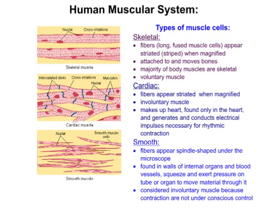The last system in this section is the human muscular system. There are three main types of muscle cells. Skeletal muscle cells have fibers — long fused muscle cells — that appear striated or striped under the microscope. Skeletal muscles are attached to and move bones. The majority of human body muscles are skeletal muscles, and they are voluntary muscles because their contractions are under our conscious control.